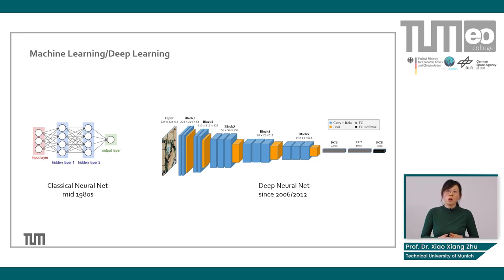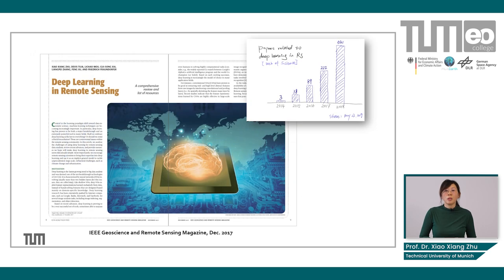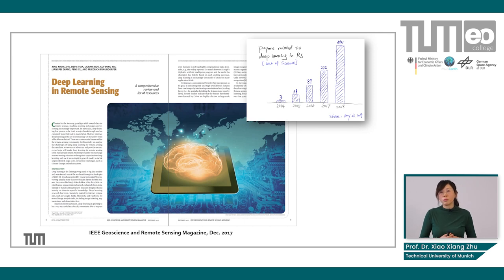In order to profit from such architectures, it is very important to have a sufficient number of training data, sufficient computing power, and breakthroughs in designing training algorithms. Deep learning has already become an established tool in remote sensing. Looking at the literature, starting from around ten years ago, you can see papers related to deep learning in remote sensing, with an approximately exponential increase that reflects how active this field is.